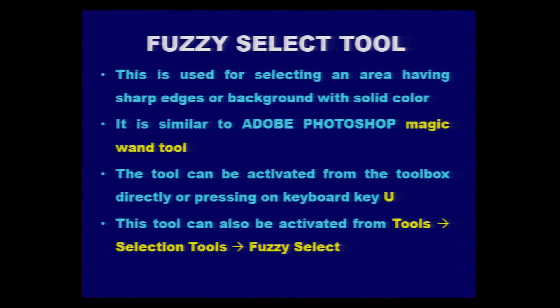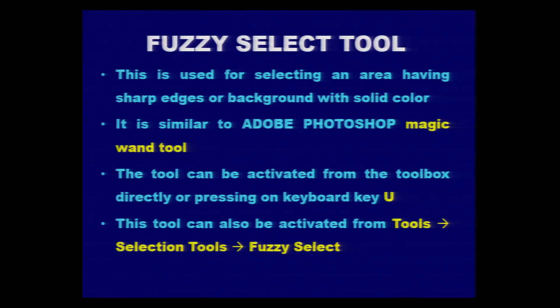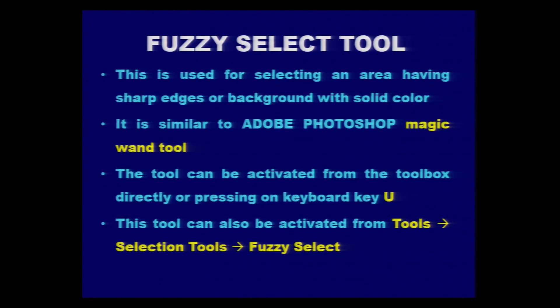Let us see how the fuzzy select tool can be used for doing the selection. This tool is used for selecting an area having sharp edges or a background with solid color. We need to understand the characteristics of the image — if the image has sharp edges or background pixels of the same solid color. It is similar to Adobe Photoshop's Magic Wand tool. This tool can be activated by using it directly from the toolbox or by using the keyboard shortcut U.